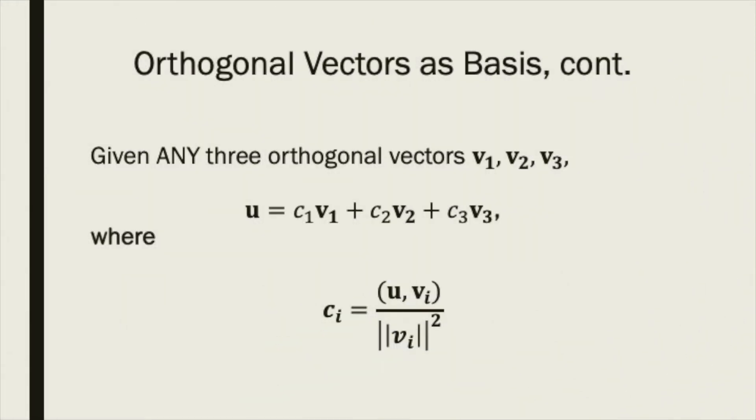i, j, and k are not the only orthogonal basis possible for three-dimensional space. Given any three orthogonal vectors, say v1, v2, and v3, you can still write any other vector u as a linear combination.